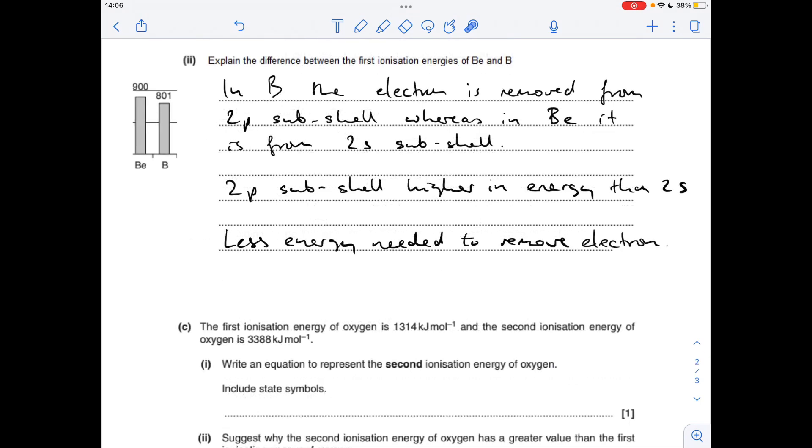The next part talks about one of the anomalies: boron versus beryllium, which doesn't follow the trend. Why is boron's first ionisation energy less than beryllium's, even though it comes after and has an extra proton? That's because in boron the electron is removed from a 2p subshell, whereas in beryllium it's removed from a 2s subshell. The 2p subshell is higher in energy than 2s, so less energy is needed to remove the electron in boron.